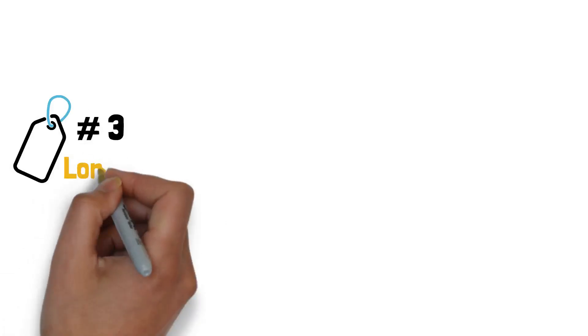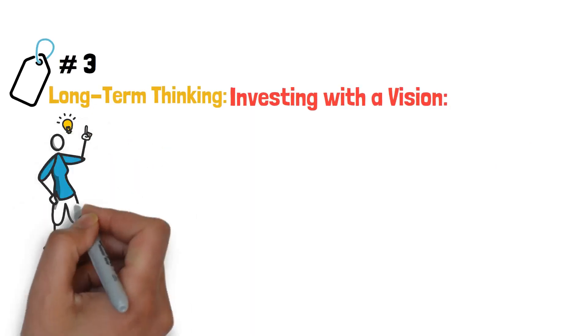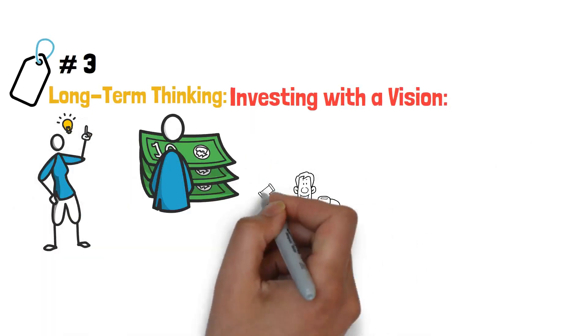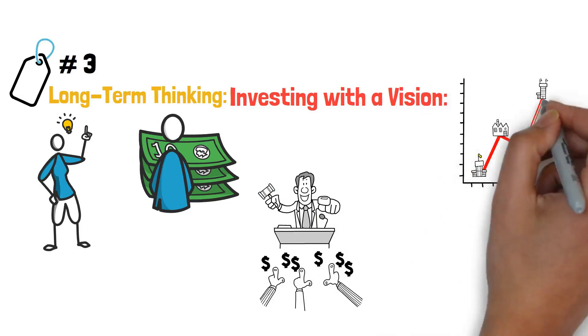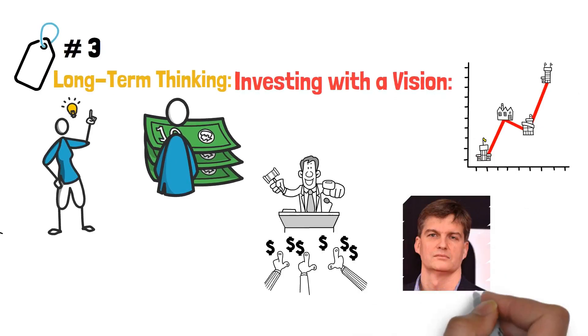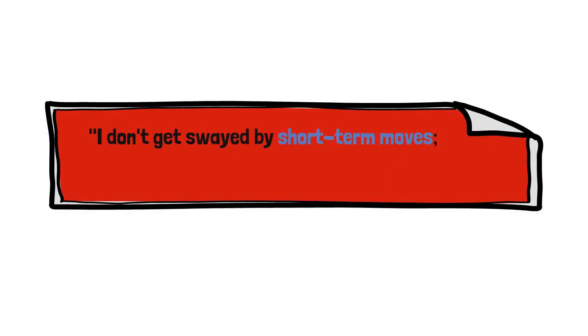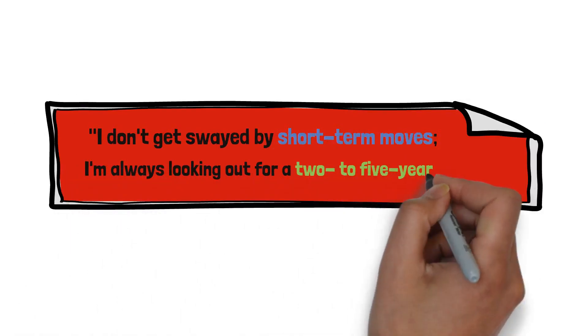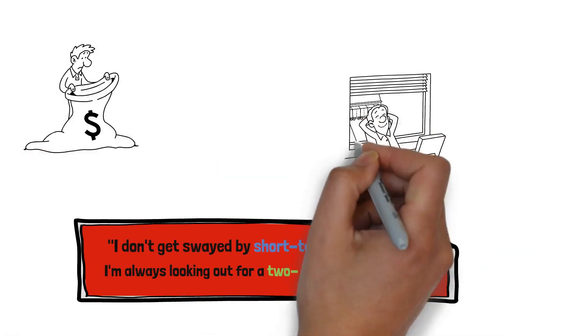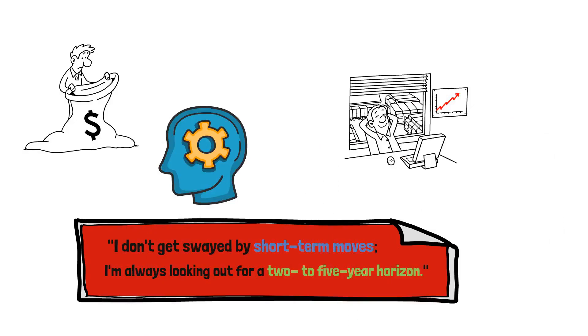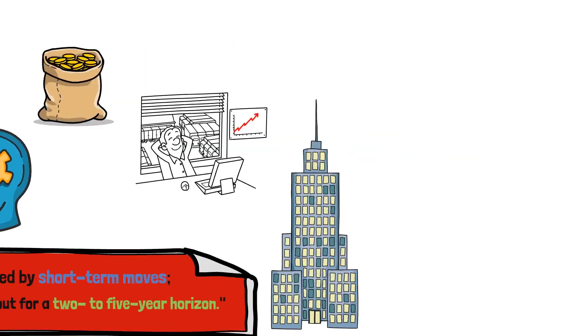Tip number 3: Long-Term Thinking, Investing with a Vision. Long-Term Thinking is a crucial mindset for successful investors. It involves looking beyond short-term market fluctuations and focusing on the potential of investments over extended periods. Michael Burry emphasized the importance of this approach, stating, I don't get swayed by short-term moves. I'm always looking out for a 2-to-5-year horizon. This quote highlights the need to resist the urge for quick gains and instead embrace a patient perspective. By adopting a long-term mindset, investors can ride out market volatility and capture the full potential of their investments.